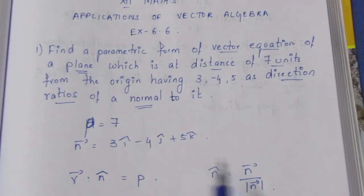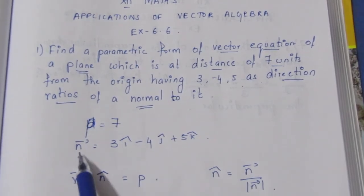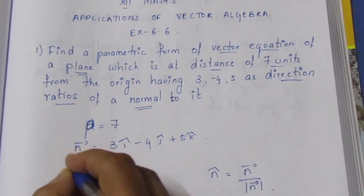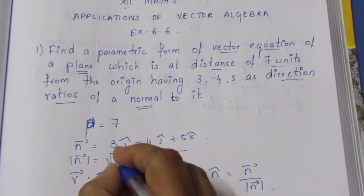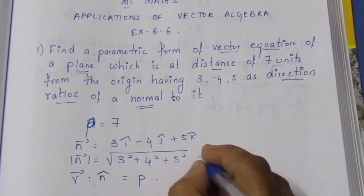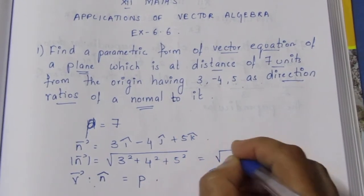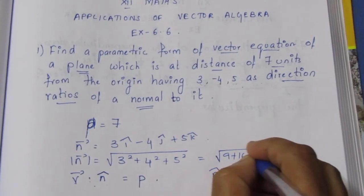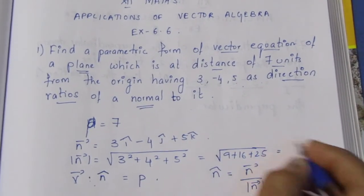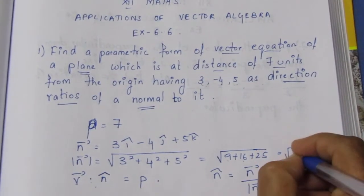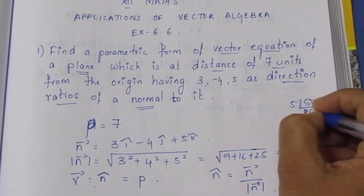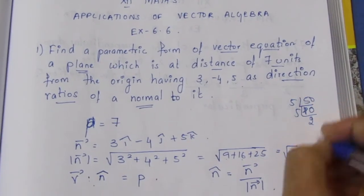So from n⃗ we substitute to find |n⃗|. The modulus of n⃗ is equal to the root of 3² + 4² + 5², which gives root of 9 + 16 + 25 = root of 50. By prime factorization, root 50 = 5√2.